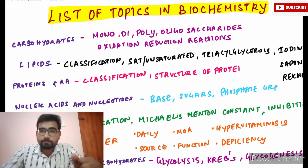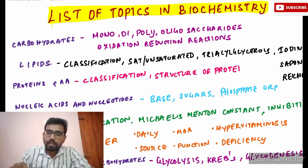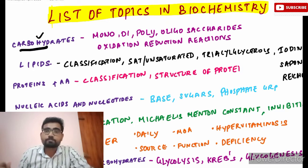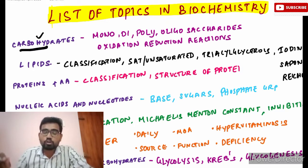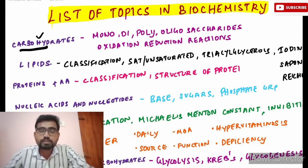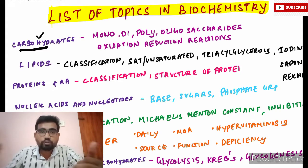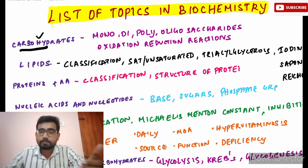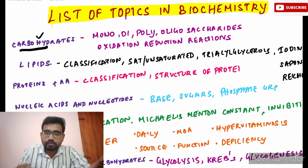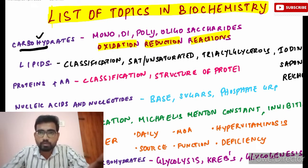Biochemistry is somewhat easy to understand but it is volatile — like pharmacology — so constant revision is needed. I'll give you a list of topics you should have read at least once from the textbooks, along with the number of MCQs in your basic guides. The first topic is carbohydrates: you need to read about monosaccharides, disaccharides, oligosaccharides, polysaccharides, mucopolysaccharides, ground substances, proteoglycans, glycosaminoglycans, glycoproteins, and oxidation-reduction reactions.